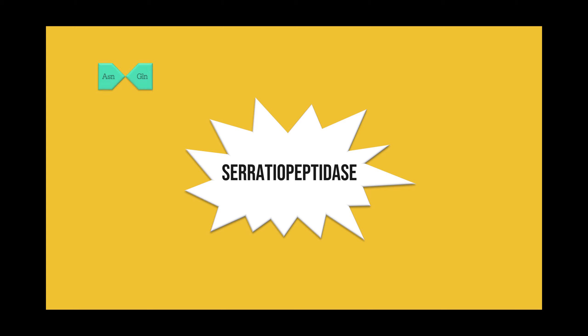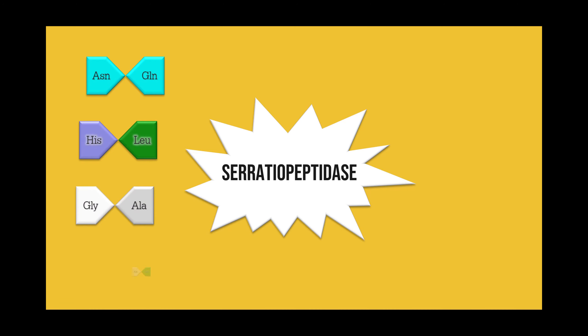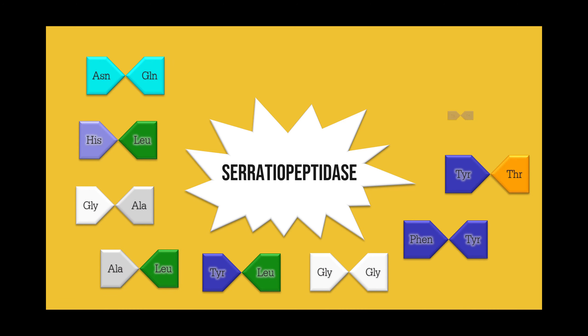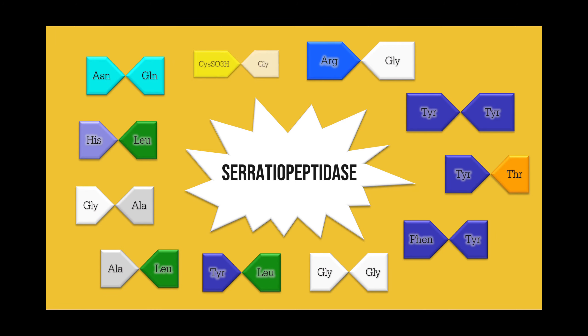Serratiopeptidase shows broad substrate specificity. It can cleave peptides with linkages of asparagine with glutamine, histidine with leucine, glycine with alanine, alanine with leucine, tyrosine with leucine, glycine with glycine, phenylalanine with tyrosine, tyrosine with threonine, tyrosine with tyrosine, arginine with glycine, and cystic acid with glycine.